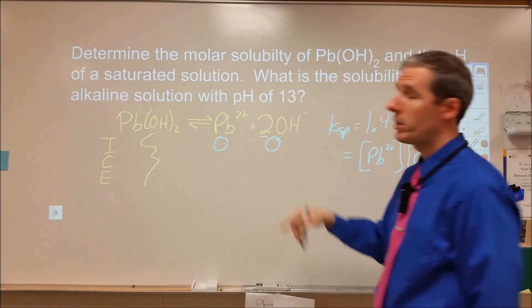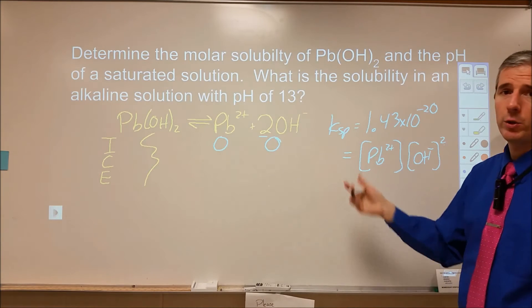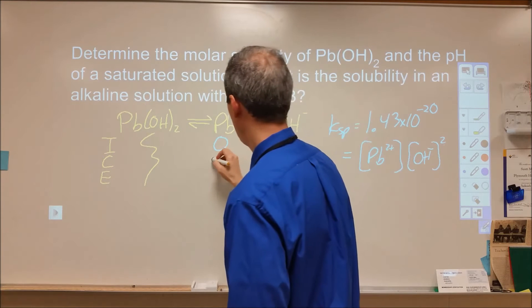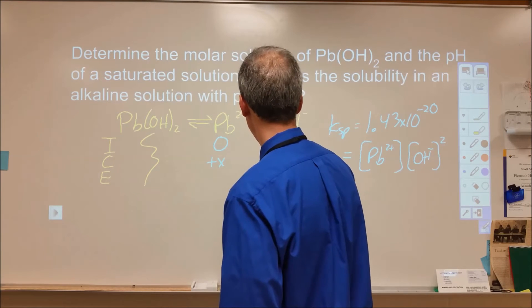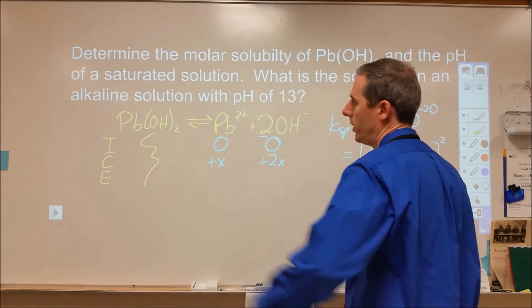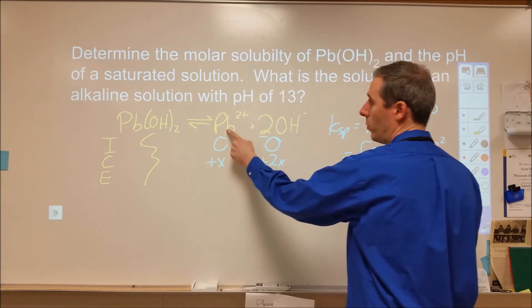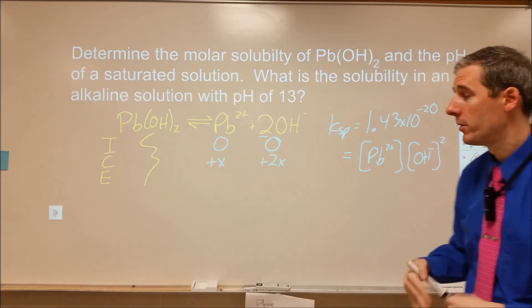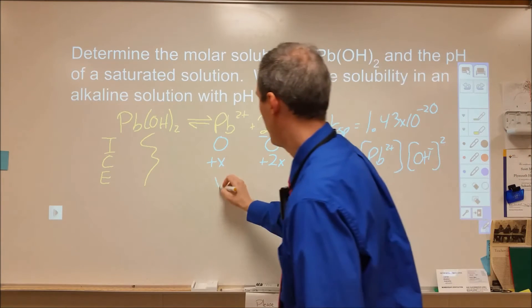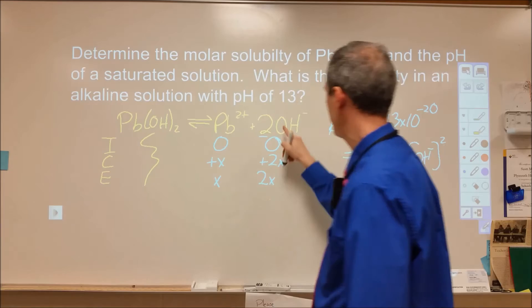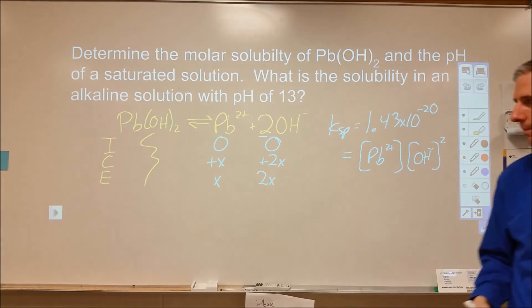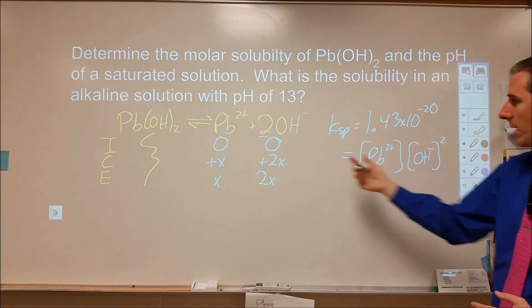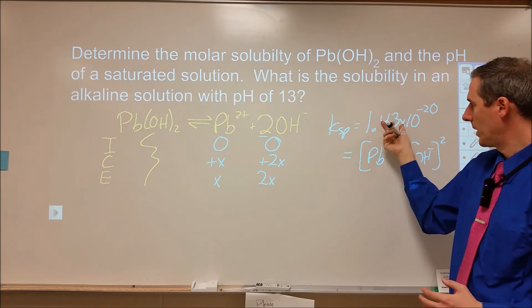In reality, we actually start with 10 to the negative 7th of that in neutral water. We're going to assume that's small enough to ignore. We know that for every change in lead, we get double that change in hydroxide. In other words, every one of these that dissolves produces one of these and two of those. So I'm going to gain x of this and 2x of this. At equilibrium, I'll have twice as much of this as I will of that.